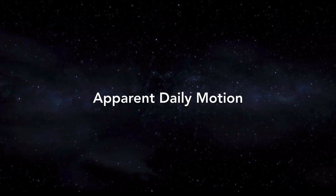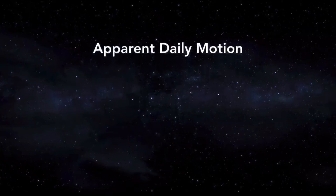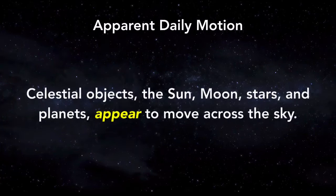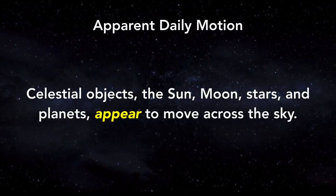Apparent daily motion is when celestial objects such as the sun, the moon, stars, and other planets appear to move across the sky. The purpose of this video is to introduce you to not only some of those motions, but also the different types of celestial objects that we can see.